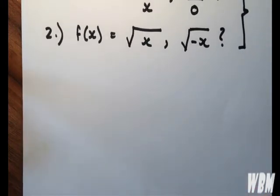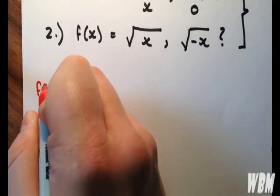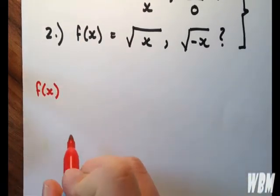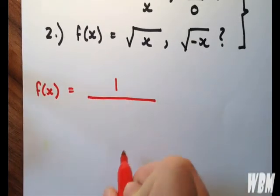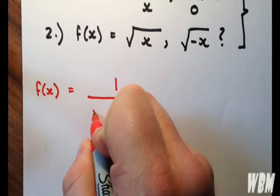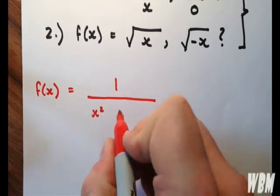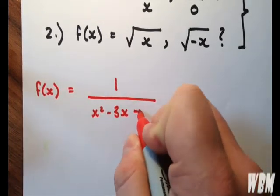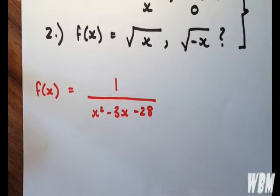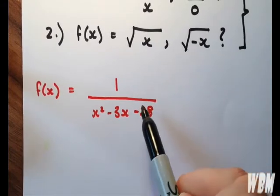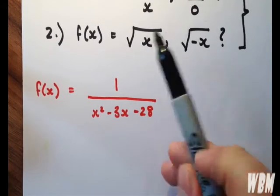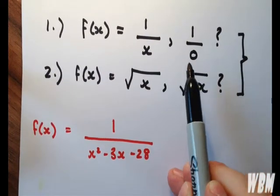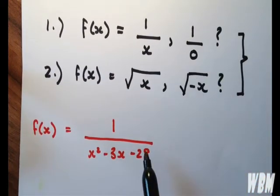The first function is f(x) equal to 1 divided by x² minus 3x minus 28. What we want to do is, we've noticed we've got a fraction, there's no square roots, so we want to make sure that there's not a 0 in the denominator.